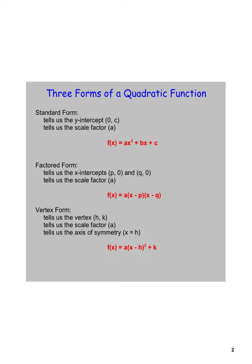Just a quick recap of the three forms of quadratic. We have the standard form, which is the one we're probably most used to. That really helps us find that y-intercept most clearly. It also has that scale factor out front, as they all do, which helps us determine if it's opening up or opening down — a smiley or frowny face — and that helps us determine max and min. It also helps us determine the pattern of change.